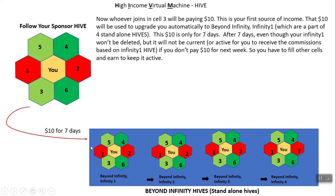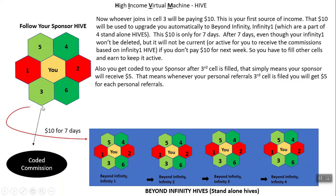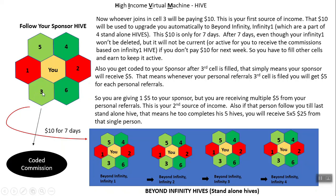After seven days, even though your Infinity 1 won't be deleted, it will not be active if you don't pay $10 for the next coming week. It won't be active for you to receive commission based on the Infinity 1 hive. So you have to fill all the other cells as soon as possible to keep your next hive active. Also, when your third cell is filled, you get coded to your sponsor — it simply means your sponsor will receive $5. Whenever your personal referral's third cell is filled, you will get $5 for each personal referral. You are just giving $1.50 to your sponsor but receiving multiple $5 from your personal referrals. This is your second source of income.